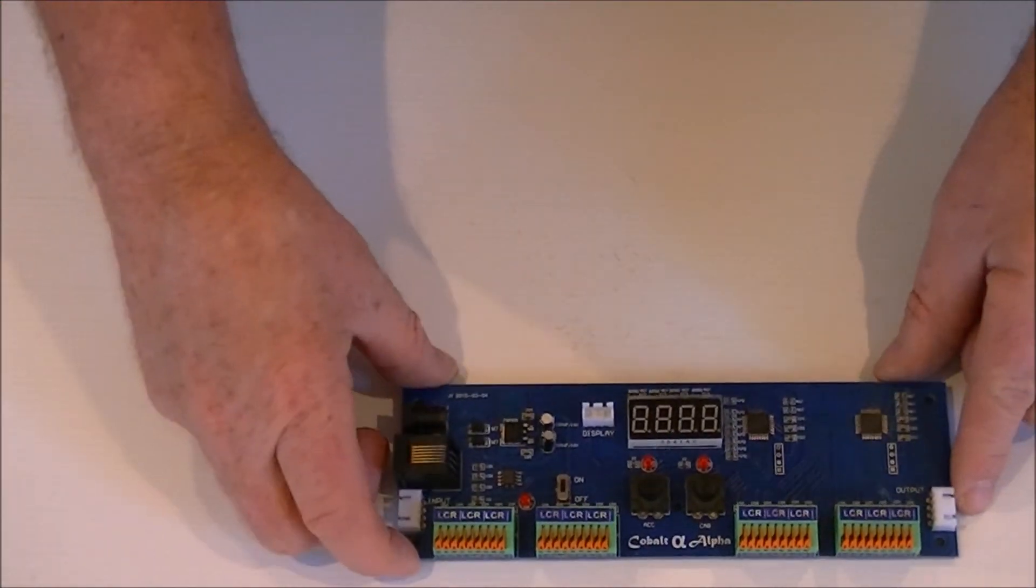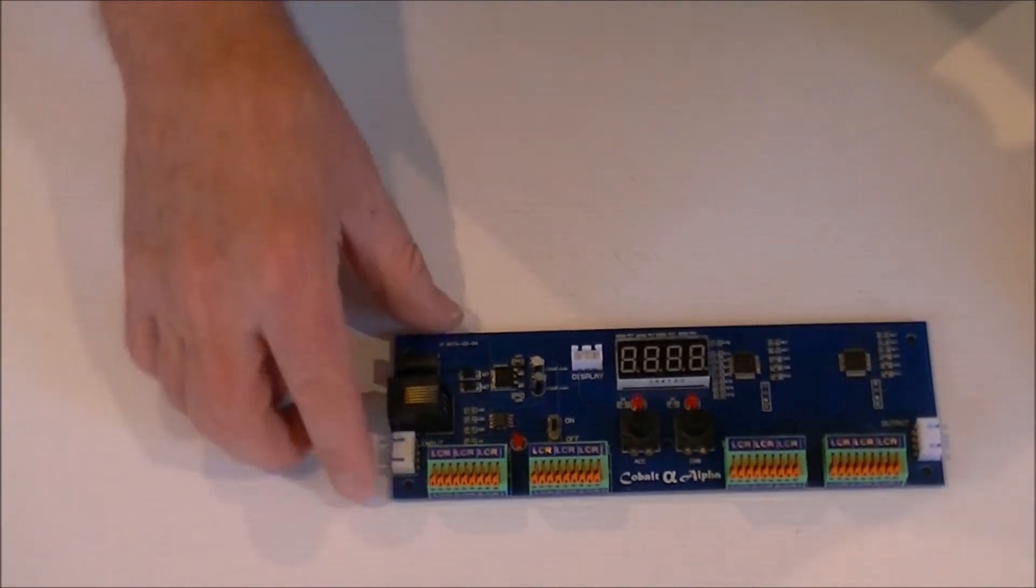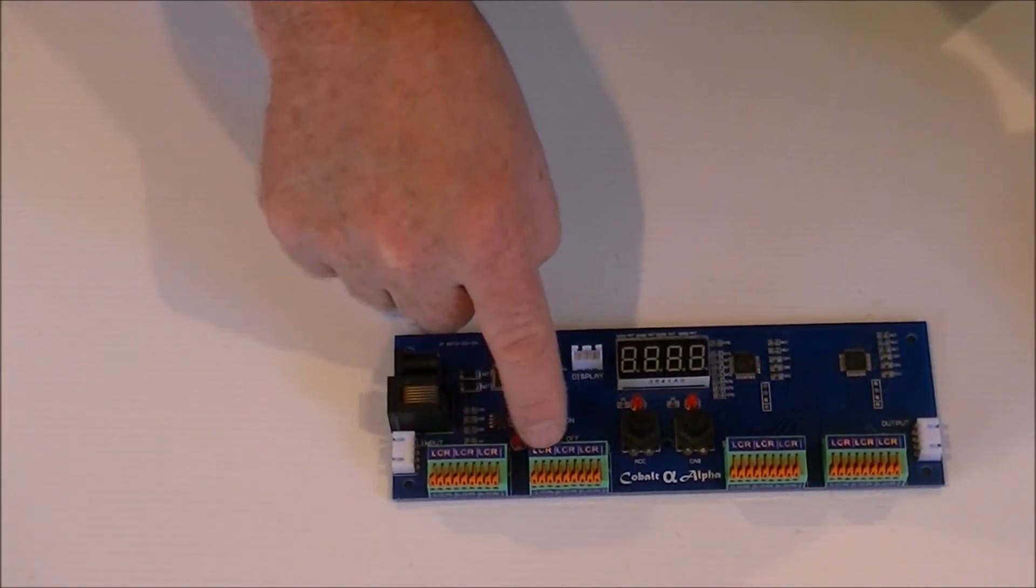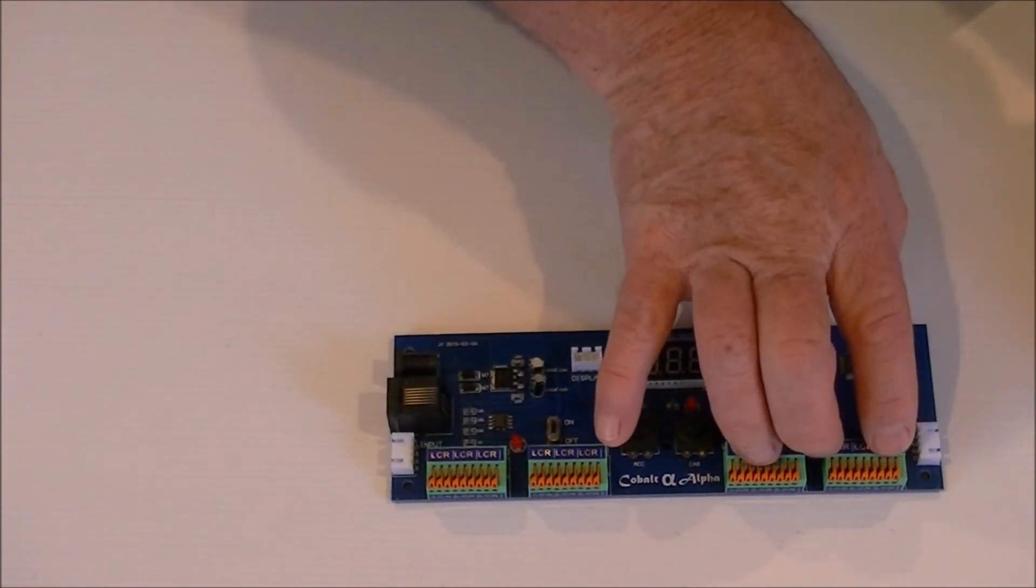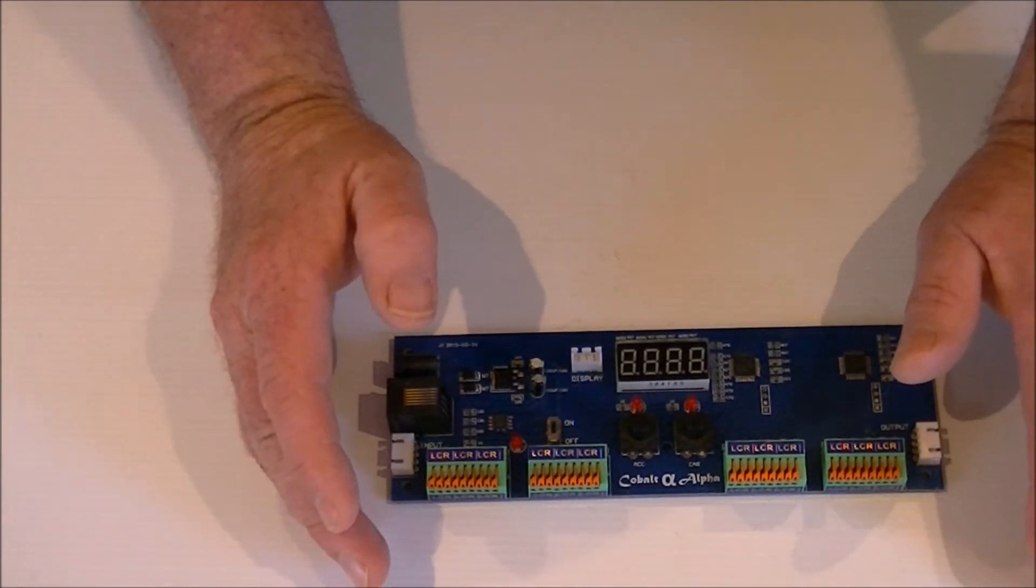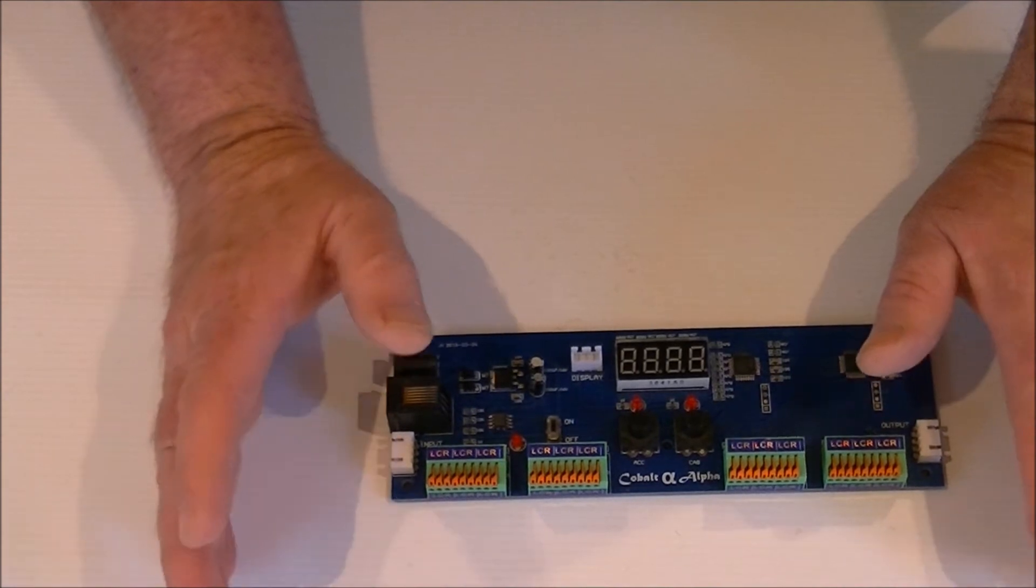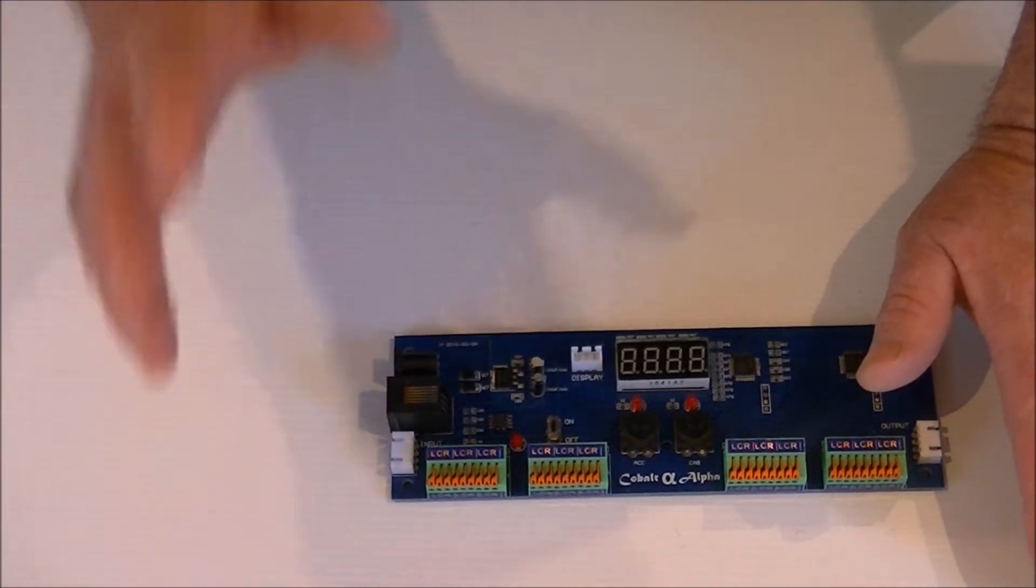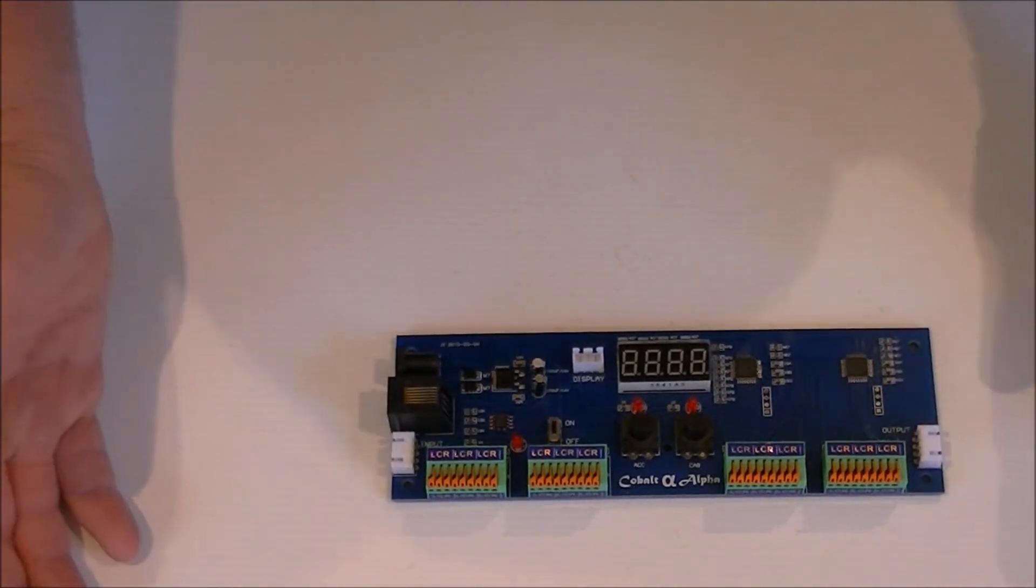This is the cobalt encoder here. Components of this, you can see here that we have one, two, three, four, five, six inputs here, six inputs here. So this will control 12 addresses. Not 12 points, 12 addresses. You have to remember, if you've got two points for the same address, it still comes as one address here. The turnouts and things like that.